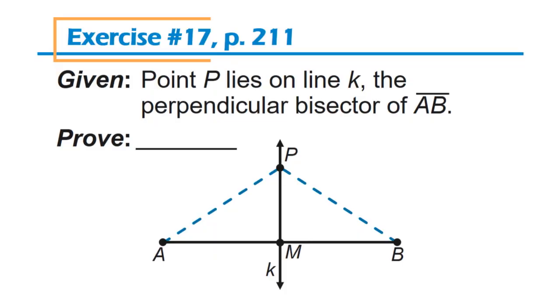You'll notice that while the authors kindly provided a diagram and a given, the proof statement is left blank. What do you think the proof statement should be? In the statement of the theorem, it said the point is equidistant from the endpoints. So if P is equidistant from A and B, the proof must be that AP equals BP. It's always vitally important when completing a proof to know what it is you're trying to prove.